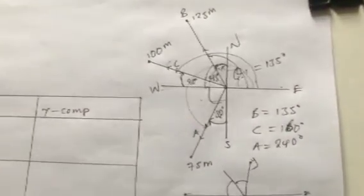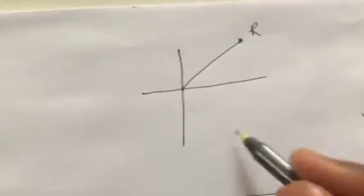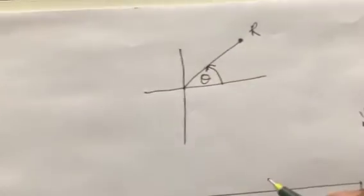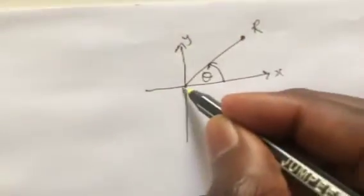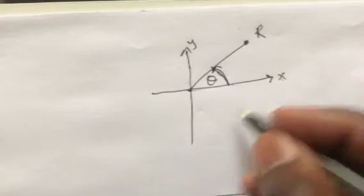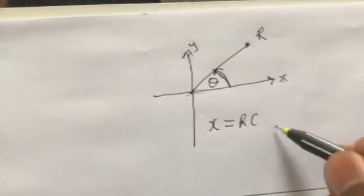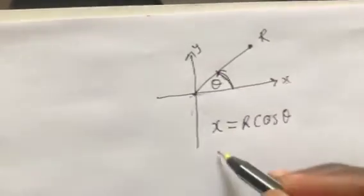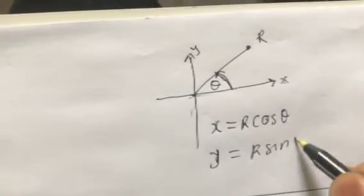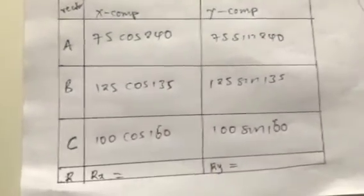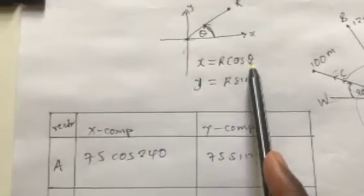Someone might ask why we resolve vectors this way. If we have a resultant vector r at angle θ, the axis cut by the angle carries cosine — that is the x-axis. So the x-component is r·cos(θ), and the y-component is r·sin(θ). This is why we use cosine for x and sine for y in the table.